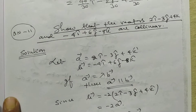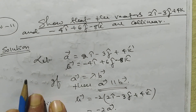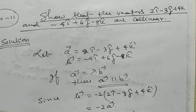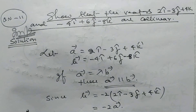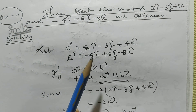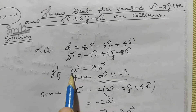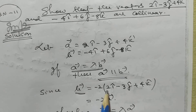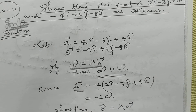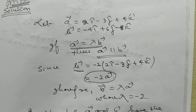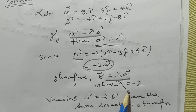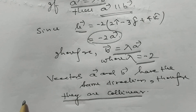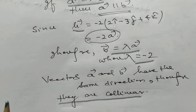Problem number 11: show that the vectors 2i − 3j + 4k and −4i + 6j − 8k are collinear. Let vector a = 2i − 3j + 4k and vector b = −4i + 6j − 8k. Observe that vector b = −2 times vector a. So vector b equals λ times vector a, where λ = −2. Therefore vector a and b are parallel and have the same line of action, so they are collinear.